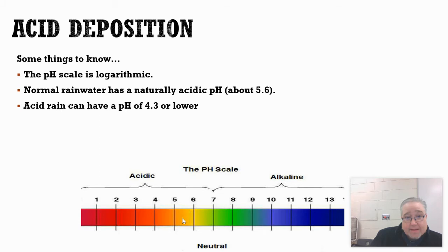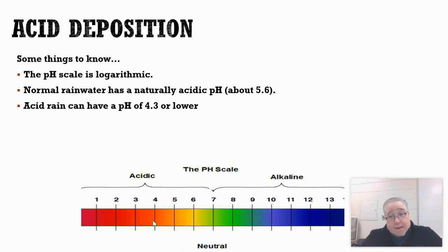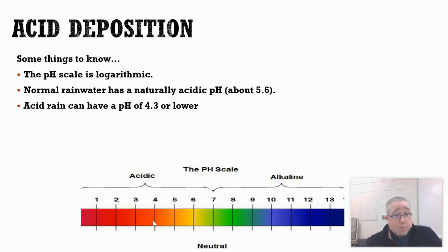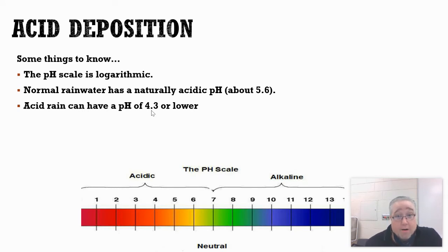Acid rain can get down into the 4s and even lower. When we get into that 4 range and below, we're talking about rain that is quite acidic. A value of 4.3 is greater than a one-point difference on our scale, so we can make the assumption that acid rain is at least 10 times more acidic than normal rainwater.